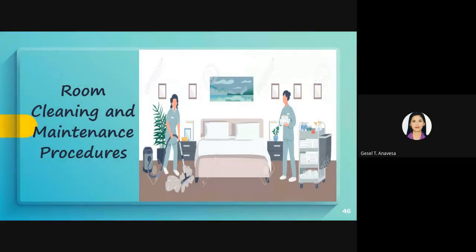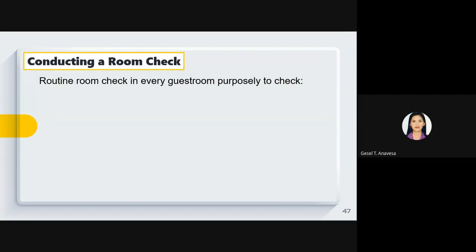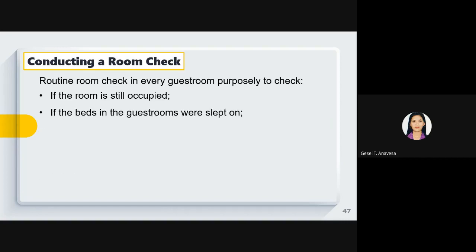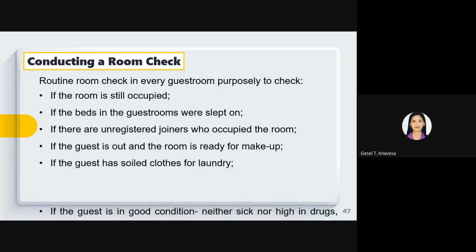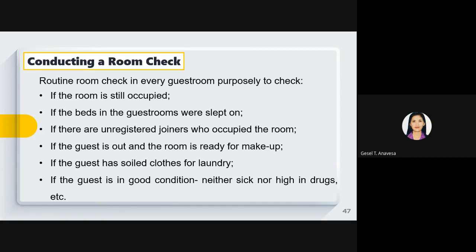Now let us proceed to room cleaning and maintenance procedures. In conducting a room check, the purpose is to check if the room is still occupied, whether the bed was slept in, whether the guest is out, whether there are unregistered joiners in the room, whether the room is ready for makeup, whether the guest has soiled clothes for laundry, and whether the guest is in good condition. If the guest requests a room makeup, the housekeeper will conduct room makeup procedures.